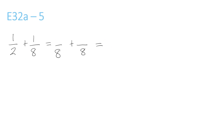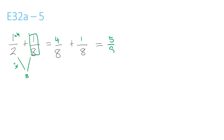This one here is different — it's 2 and 8, not 4 and 8. But still, they both go into 8. 2 times 4 is 8, so you have to times the top by 4. 1 times 4 is 4. Now 1 over 8 is already over 8, so you bring it over here. 4 plus 1 is 5 over 8.